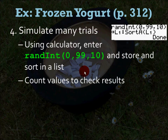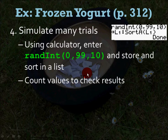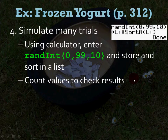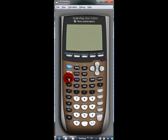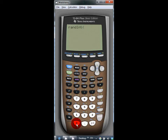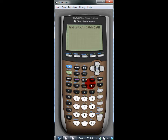The other way to do it is use your calculator. Use RANDINT 0 to 99 or 1 to 100 and store and sort the results in a list. You'll count each value to check the results — check which values are between 1 and 38 for chocolate, 39 and 80 for vanilla, or 81 and 100 for strawberry. You don't have to worry about repeated numbers here because each trial is independent. Go ahead and do that as well — you should get numbers different from what I got.